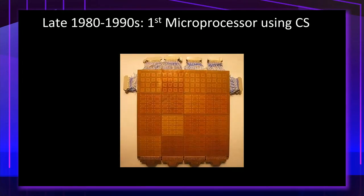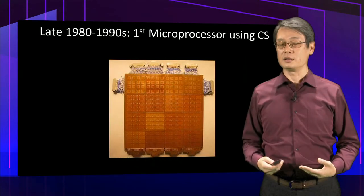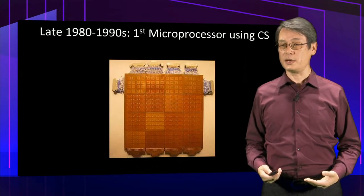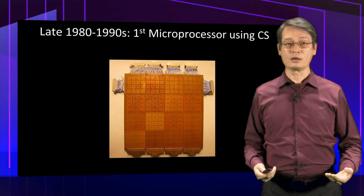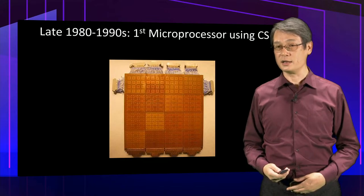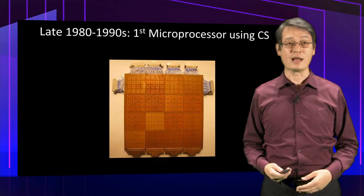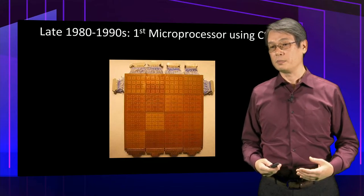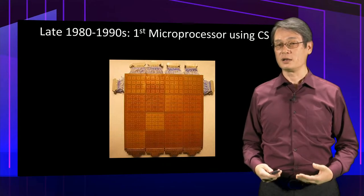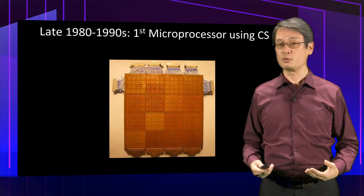Believe it or not, gallium arsenide was used in supercomputers from the late 1980s to the 1990s. It demonstrated processing speeds around three times faster than silicon. However, the project was not successful, partly because it consumed too much power.